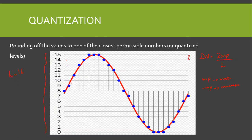Each sample amplitude is approximated by the midpoint value of the subinterval in which the sample falls. For example, if a sample falls above the midpoint between levels 9 and 10, it is assigned the value 10; if it falls below, it is assigned 9. Similarly, between levels 12 and 13: if the amplitude is greater than their midpoint, it is assigned 13; if less, it is assigned 12.